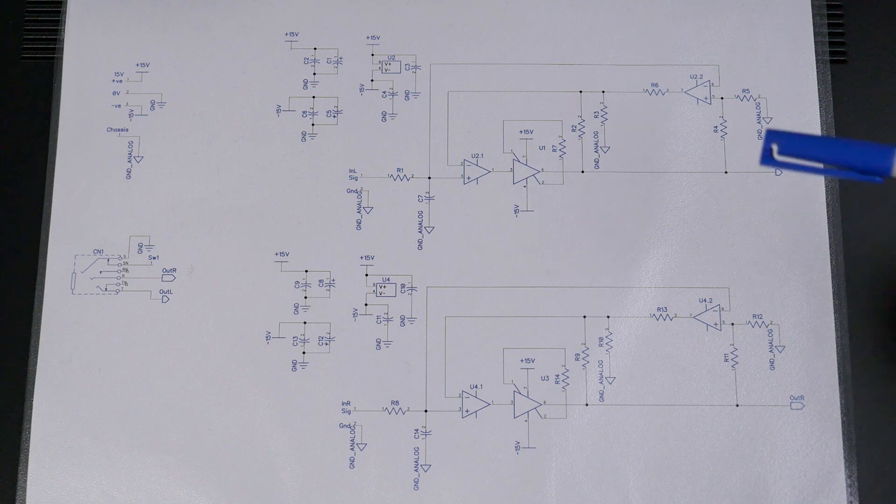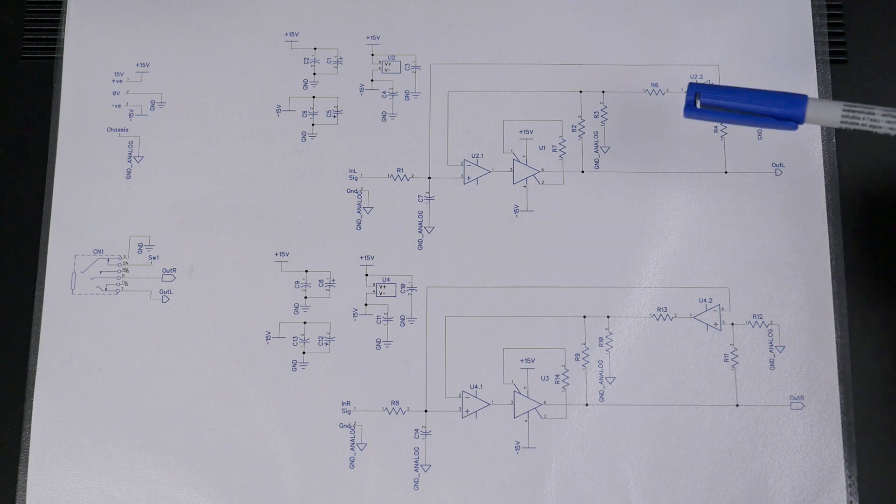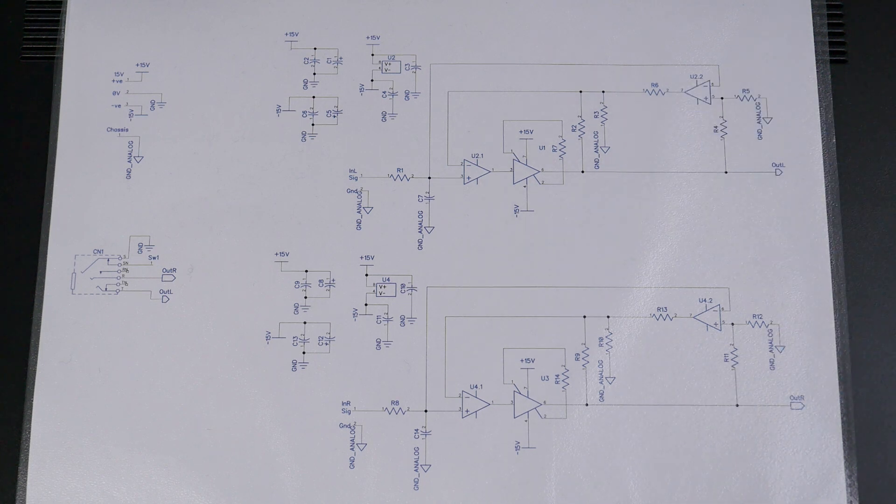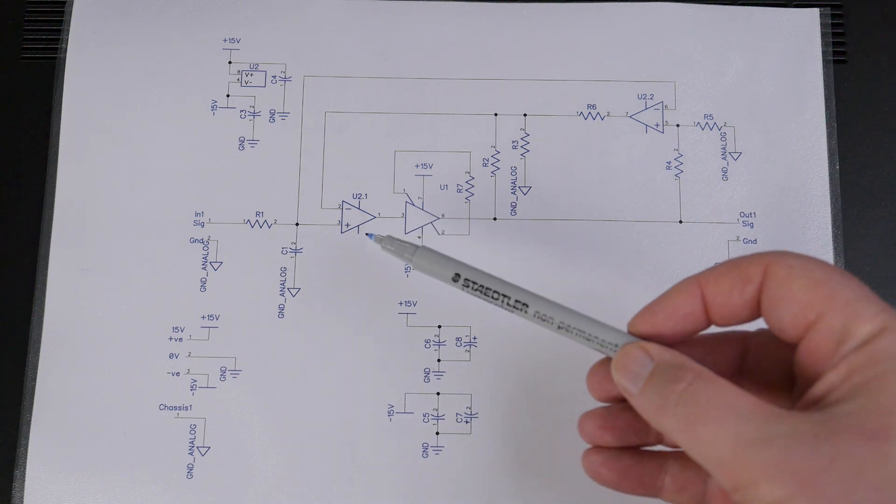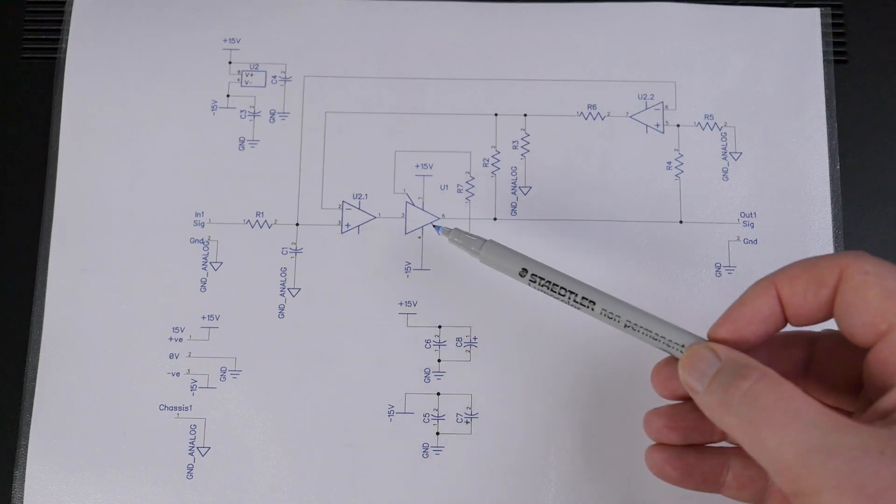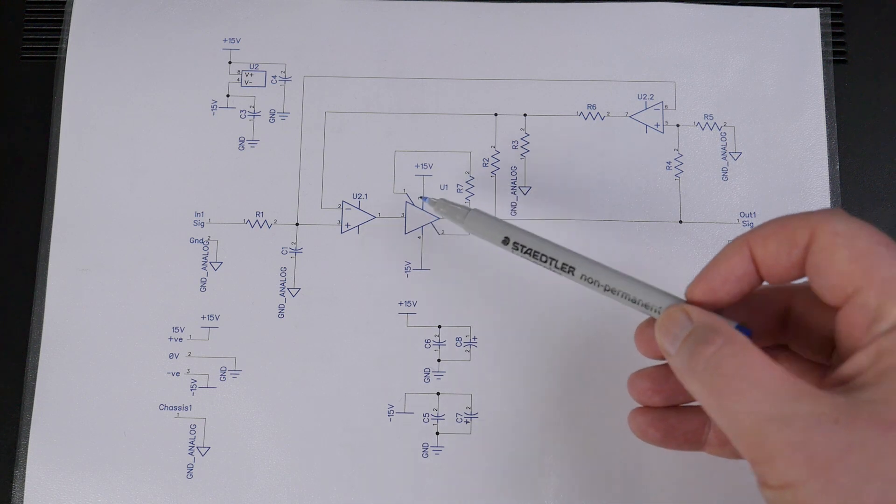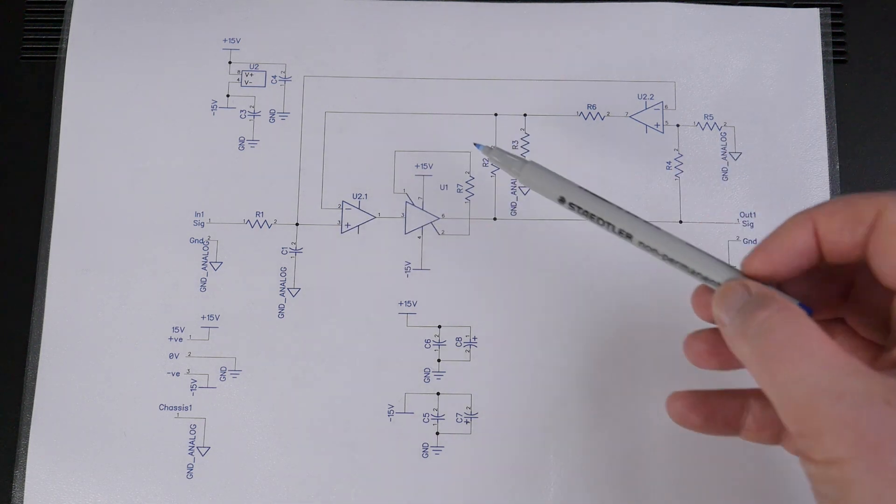Looking at our schematic we've got both channels of the headphone amplifier shown here, and I think for simplicity's sake we'll change that to just show one just to make things a bit clearer. Now ignoring all this stuff up here, what we've got is an op amp and a buffer inside the feedback loop of that op amp.